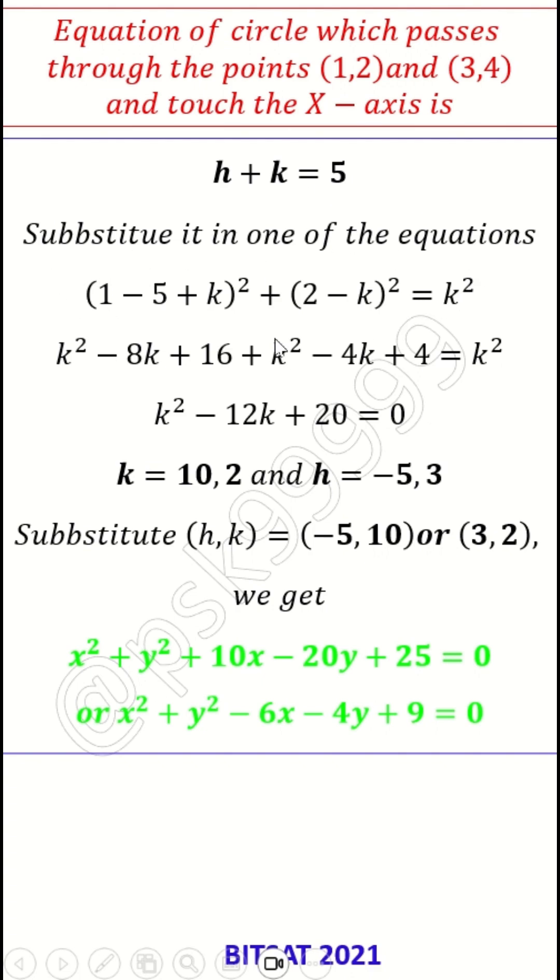With that I will get equation in single variable k. If I simplify it, I get a quadratic equation in k: k² - 12k + 20 = 0.